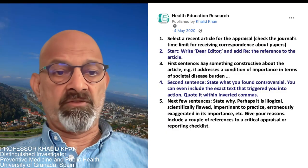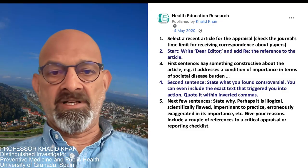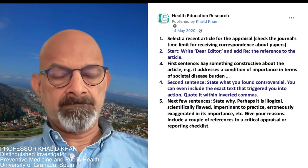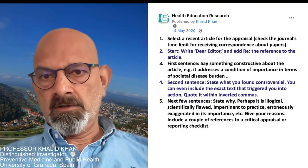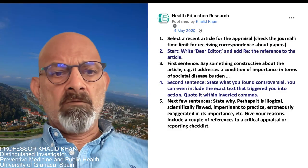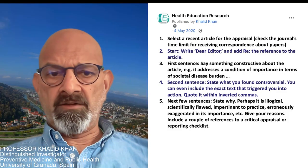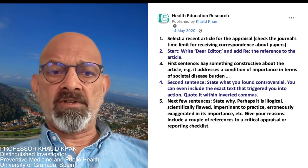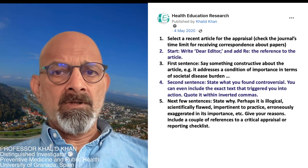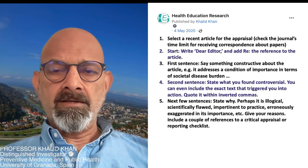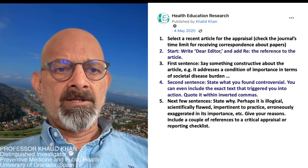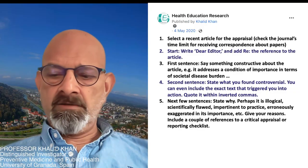For example, explain why the aspect is illogical, scientifically flawed, or impertinent, or perhaps there is some erroneous exaggeration of the importance of the findings — this type of spin is quite common in scientific articles. Give reasons with some references to back your argument. You may even refer to critical appraisal or reporting checklists. This way the editor can see how a scientific argument is being made for the statement you express in your letter.